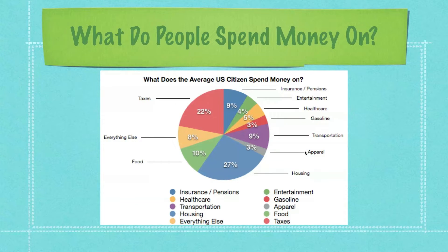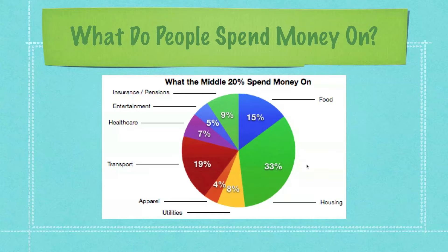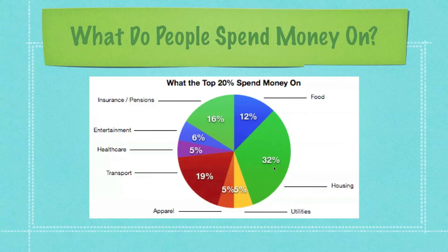Here you can see exactly what the average U.S. citizen spends money on as a percentage. What's interesting is how these numbers don't dramatically change across different income levels. For the bottom 20%, insurance, pensions, and investments account for only 2% — that's why they don't have money to save — and housing is 39%. For the middle 20%, housing drops to 33% and investments jump to 9%. Food barely changes from 17% to 15%. The major difference at the top 20% is the large amount set aside in retirement accounts and insurance, while utilities fall.